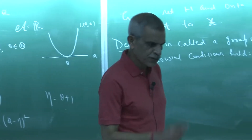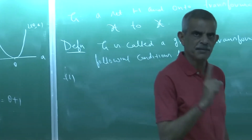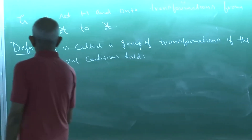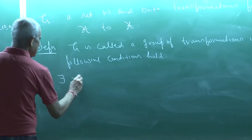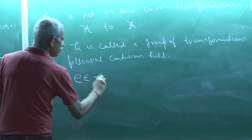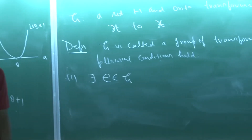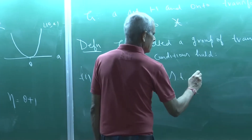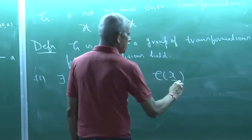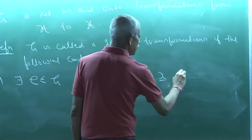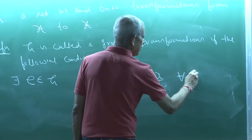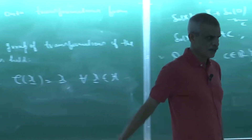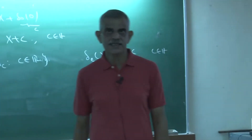The first condition is there should be an identity map in G. That means, there exists a transformation E in G which is an identity transformation, such that E(x) = x for every x in χ. This is also called the existence of identity transformation.